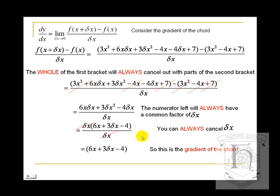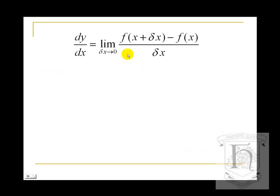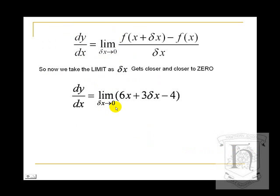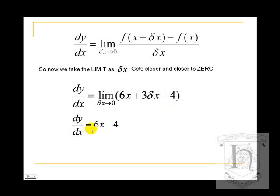Now we take the limit as delta x tends to 0, giving us our definition of the derivative. dy/dx is the limit as delta x tends to 0 of 6x plus 3·delta x minus 4. The 3·delta x term becomes so very tiny that it is insignificant — imagine it as 0 but never write it as 0, because it is tending towards 0. In the limiting case we are left with 6x minus 4, so dy/dx equals 6x minus 4.